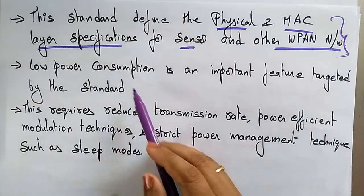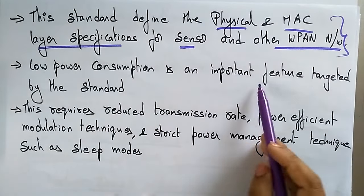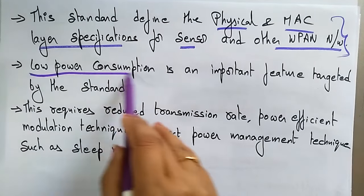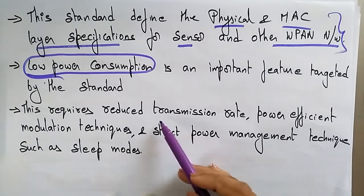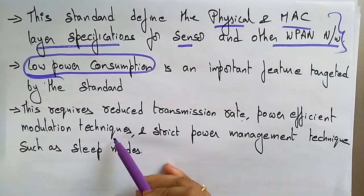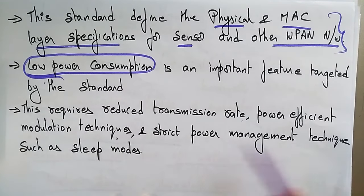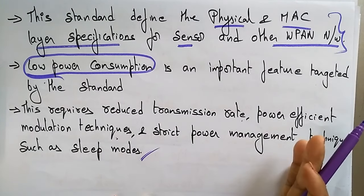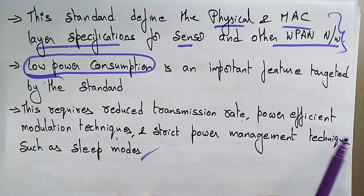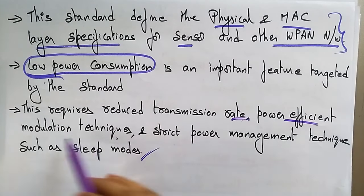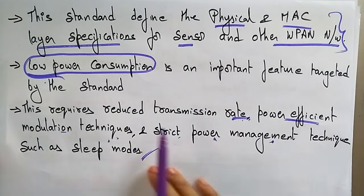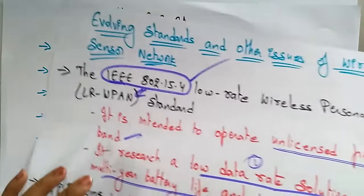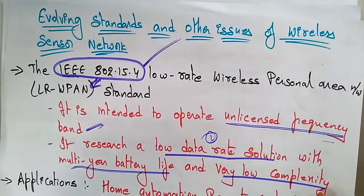Low power consumption is an important feature targeted by this standard. It requires reduced transmission rates, power-efficient modulation techniques, and strict power management techniques such as sleep modes.